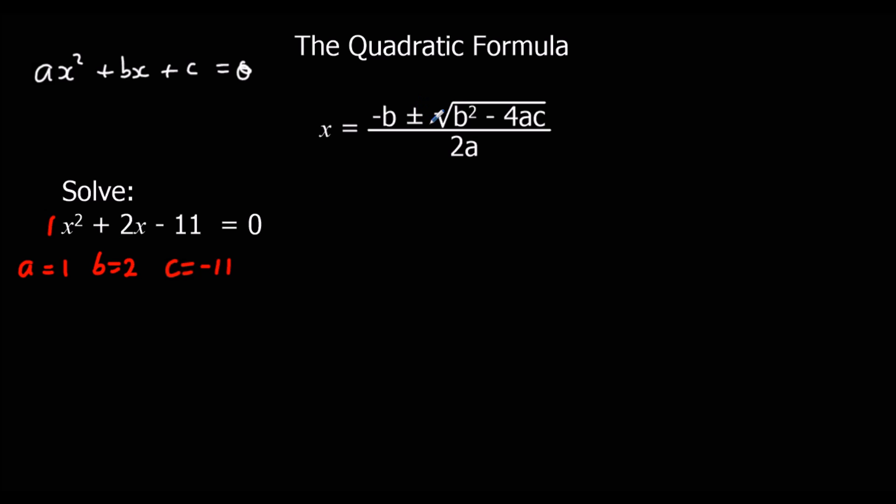Then the next thing is this plus minus sign. So when we have a quadratic, we usually get two solutions. This is actually two different formulas. It's one formula with a plus and another formula with a minus. So to get the two solutions, we use a plus once and a minus the other time.